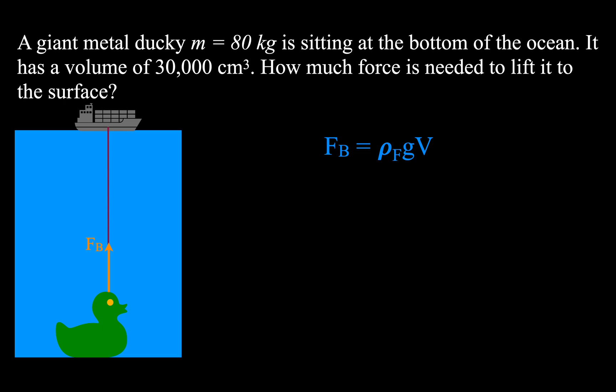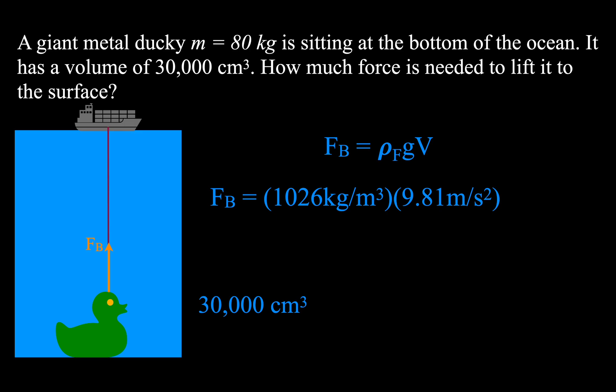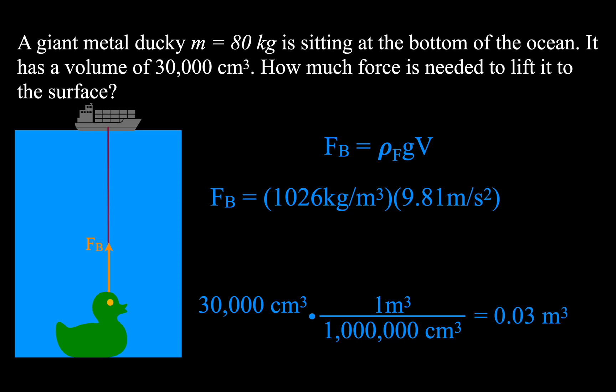The buoyant force equals density of fluid times g times volume of object. The density of ocean salt water is 1026 kg/m³, g is 9.81, and the volume of the ducky is 30,000 cm³. Converting: 30,000 cm³ × (1 m³ / 1,000,000 cm³) = 0.03 m³. Substituting in, the buoyant force is 302 N. This results from the height of the ducky creating greater pressure at its bottom than at its top, giving a net upward buoyant force.